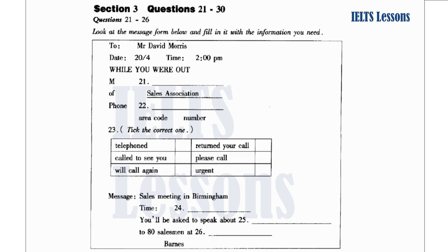Five minutes later, Mr. Morris comes back. I'm back. Did I have any calls? Yes, Mr. Hill called. He didn't leave a message. He said he'd call back tomorrow morning. And James Turner called twice. He's anxious to talk with you — he'd like you to call him as soon as you can. Did he leave a number? Yes, here it is. And Mr. Ross called just a few minutes ago. He left a message for you. Here it is.